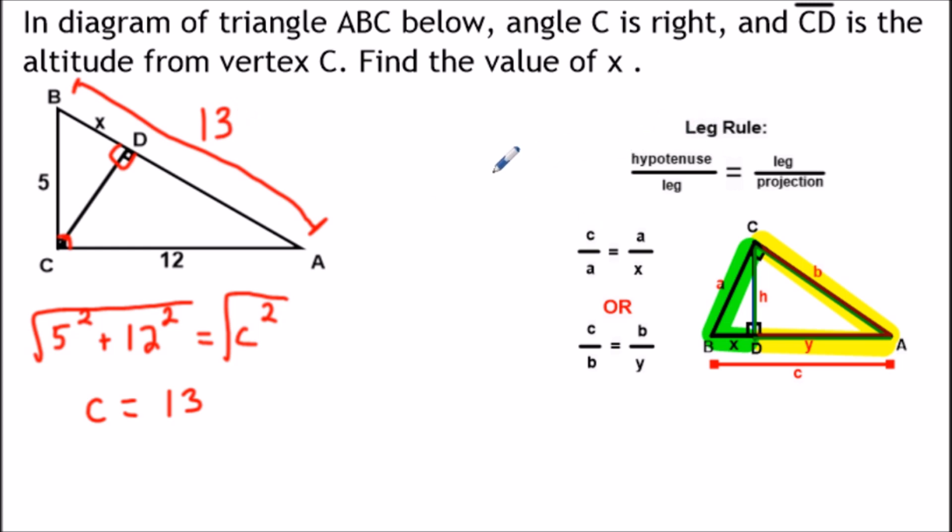Now to find the value of X, what we have to do is we're going to use the formula and we identify that 5 is one of our legs that we're going to use, because the projection of this leg is X, which is what we're trying to find. See how this leg is connected to this segment X, which is what we want.